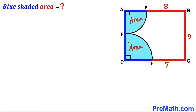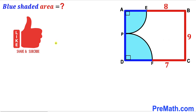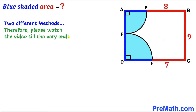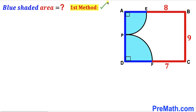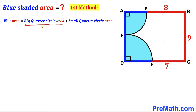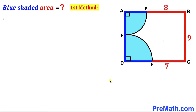Our task is to calculate the area of the blue shaded region — this area and this area combined. In this video I am going to share two different approaches. The blue shaded area is going to be equal to the sum of these two quarter circle areas: the big quarter circle area plus the smaller quarter circle area. So our task is to calculate both.